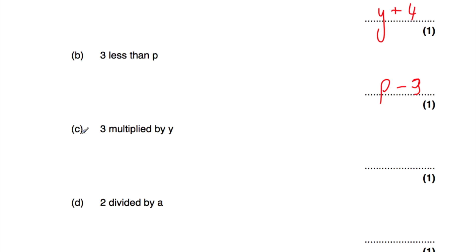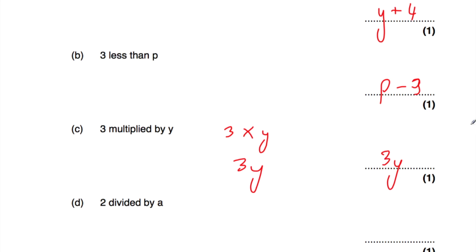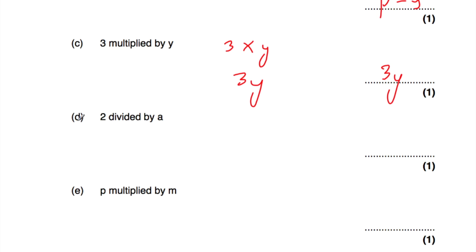Part c: three multiplied by y. We're going to do three times y. In algebra, we tend not to write the multiplication sign — we'll just write 3y. So the answer is 3y. Part d: two divided by a. We've got two, and then we're dividing it by a, so the answer is two divided by a — the two goes on the numerator and what we're dividing by goes on the denominator.